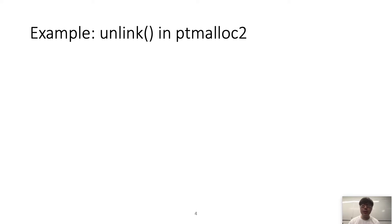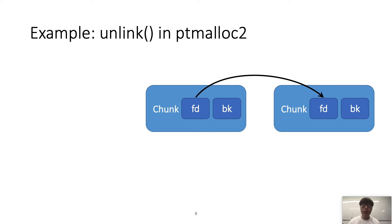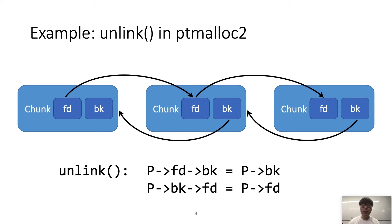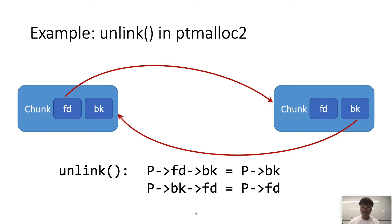One of the most famous heap exploitation techniques is called unsafe unlink. To explain this, we first look at the unlink mechanism in ptmalloc2, which is Linux's default allocator. In ptmalloc2, a heap object we call a chunk is managed by a doubly-linked list with two pointers, fd and bk. fd points to the next free chunk, bk points to the previous free chunk. If we want to remove a chunk from this doubly-linked list, unlink happens: a chunk updates the backward pointer of the forward pointer with the chunk's backward pointer, then updates the forward pointer of the backward pointer with its forward pointer, and then removes the chunk.